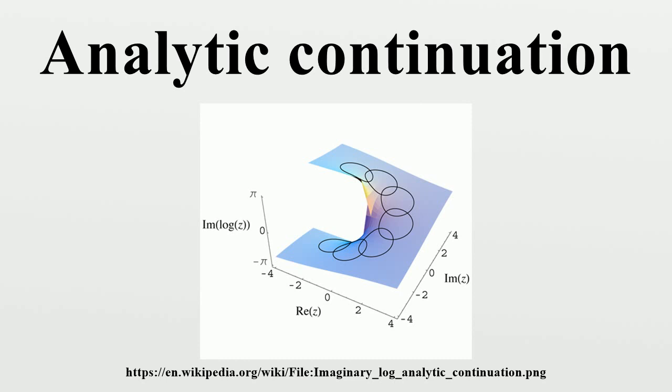This is because F1 minus F2 is an analytic function which vanishes on the open, connected domain U of F and hence must vanish on its entire domain. This follows directly from the identity theorem for holomorphic functions.